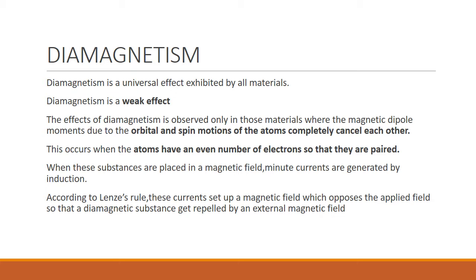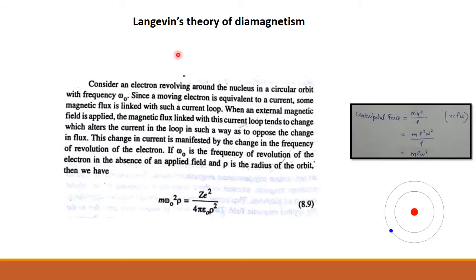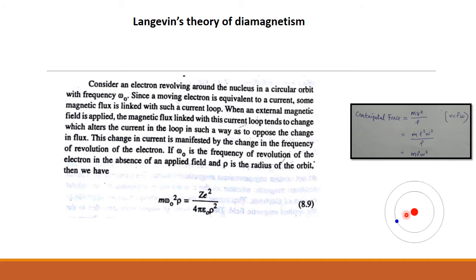So remember these points. Next, we are going to see the classical theory of diamagnetism, which is also called Langevin's theory of diamagnetism. This is an essay question — it's very important. Consider an electron revolving around the nucleus in a circular orbit. The electron is revolving with a frequency omega-zero. This moving electron is equivalent to a current, so there is a magnetic flux linked with that current loop.